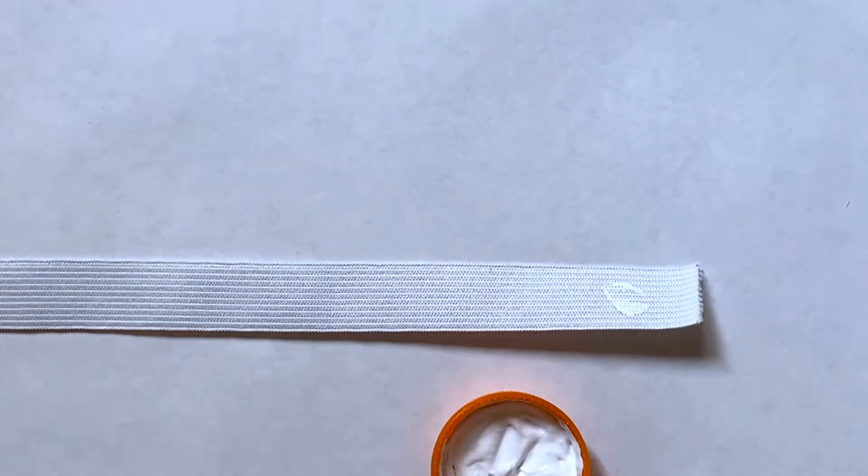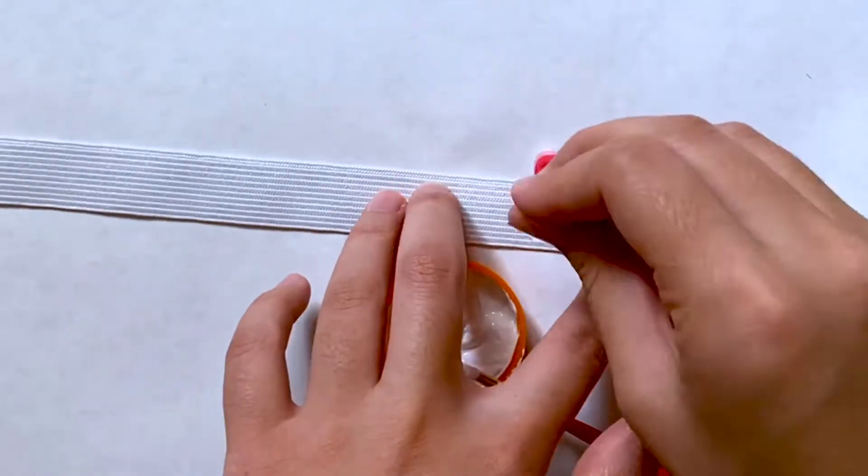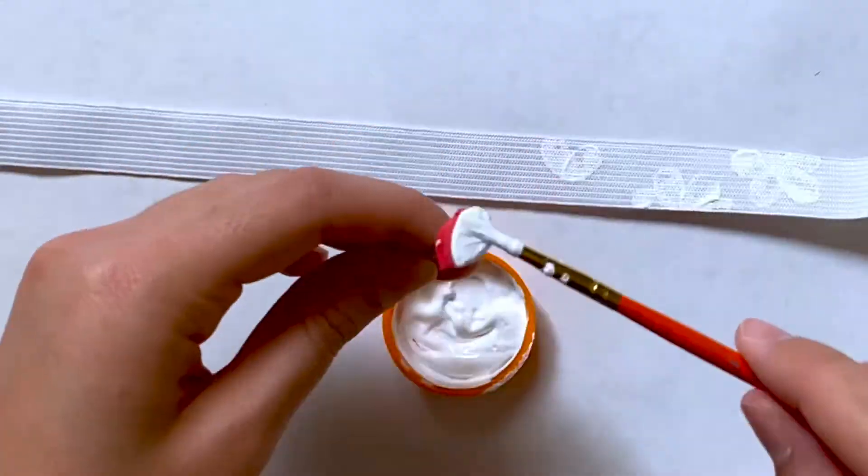As you can see, using the stamp, the petals weren't fully filled in and opaque. So after I did all the flowers, I just went in with my paintbrush and filled it in so it's nice and bright.